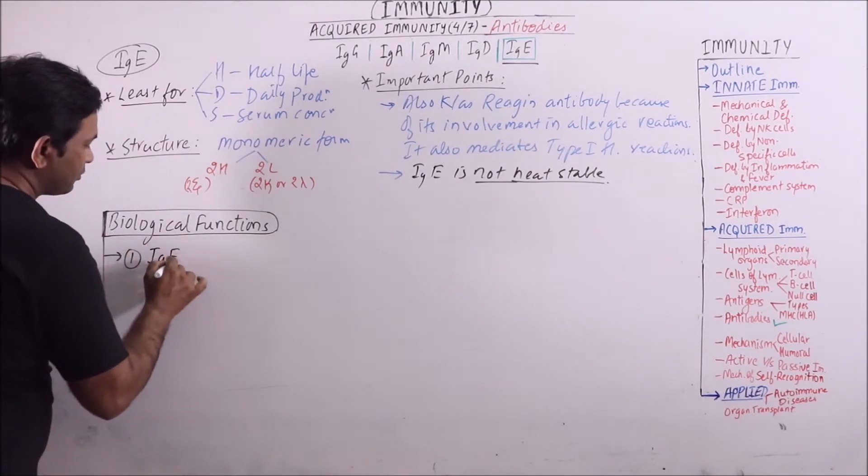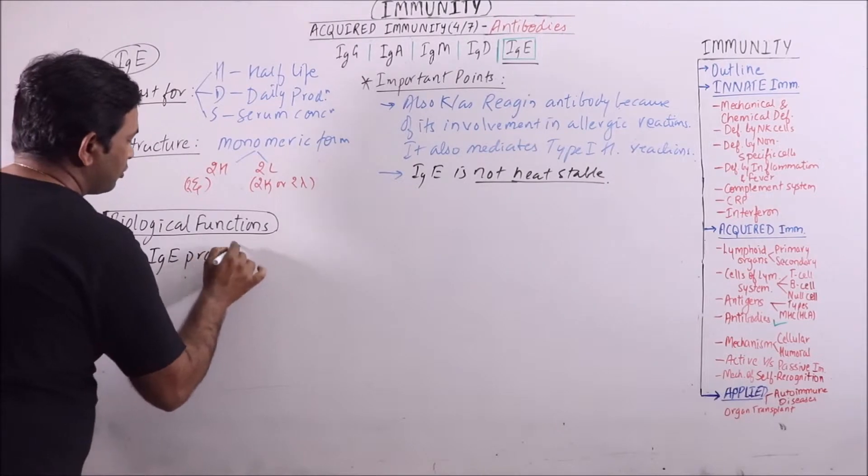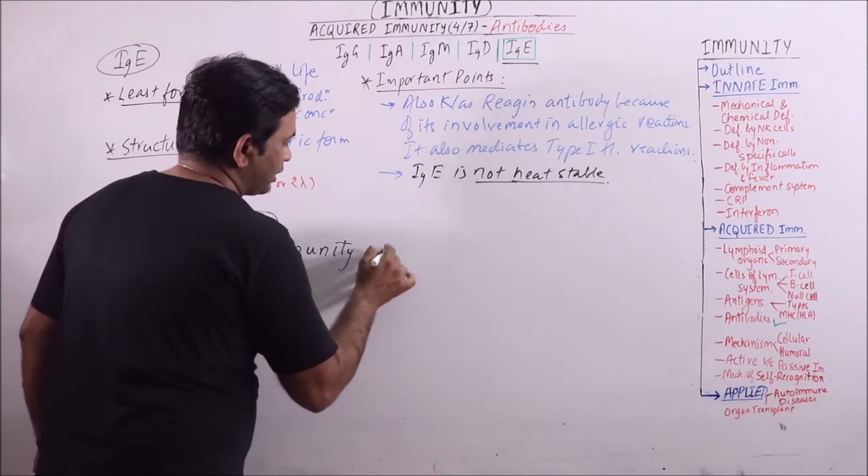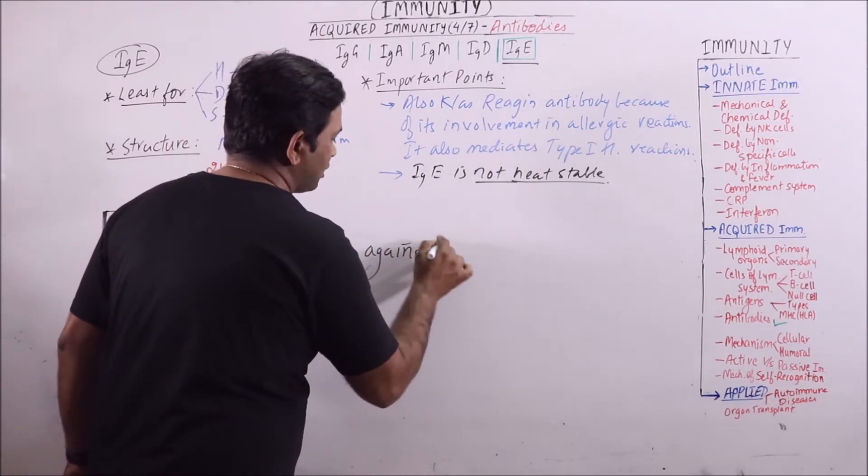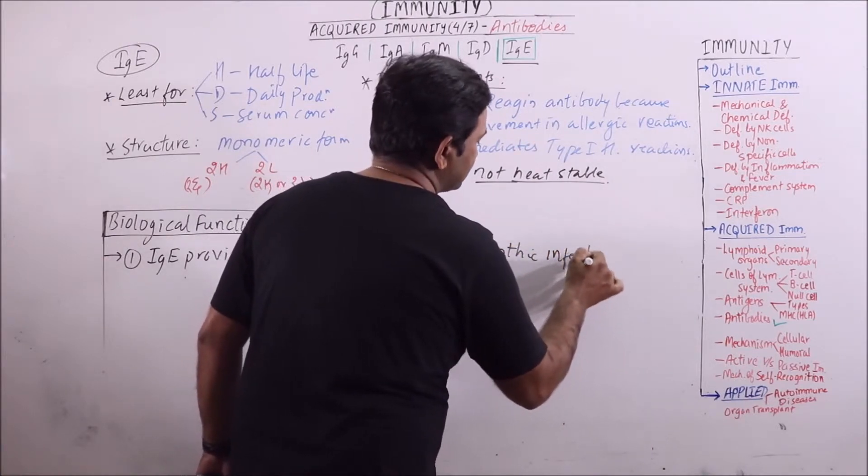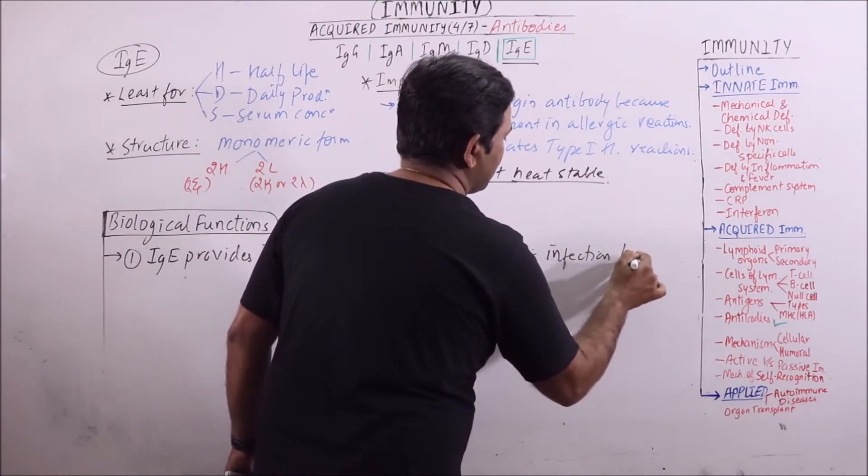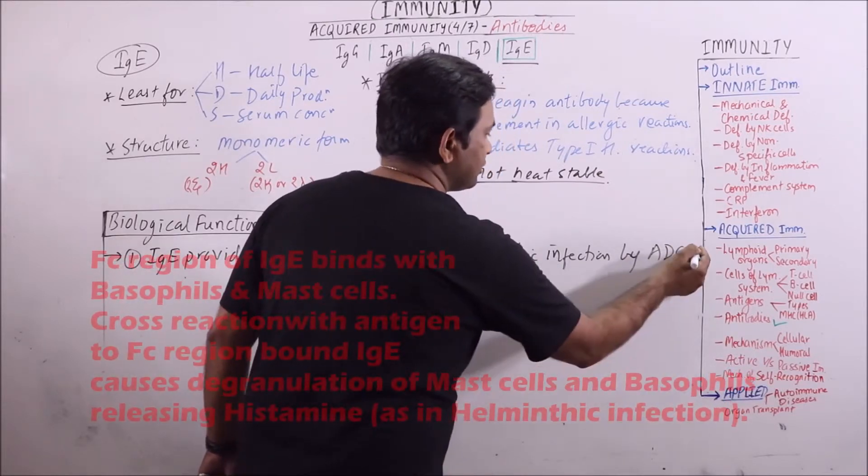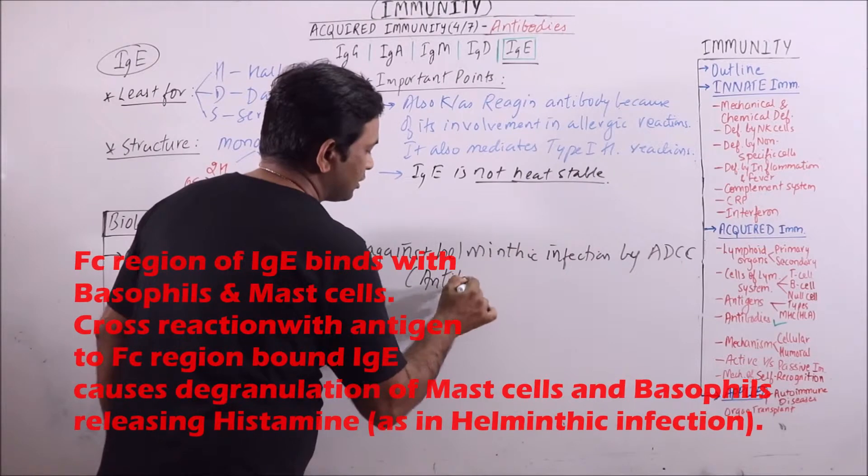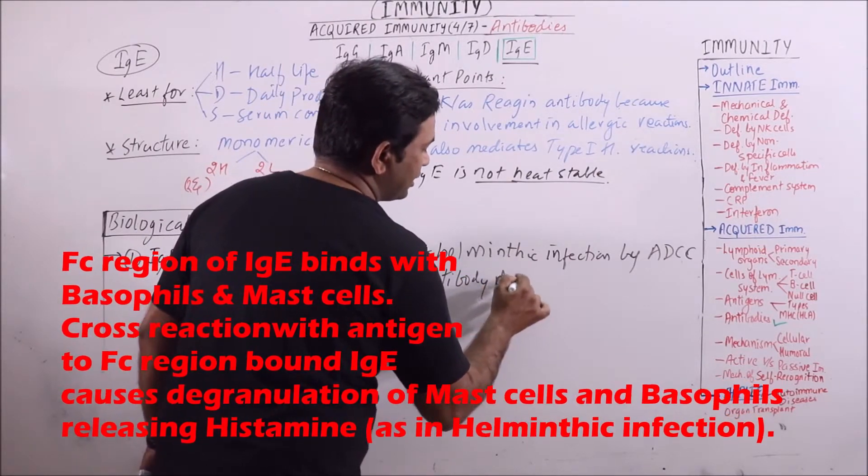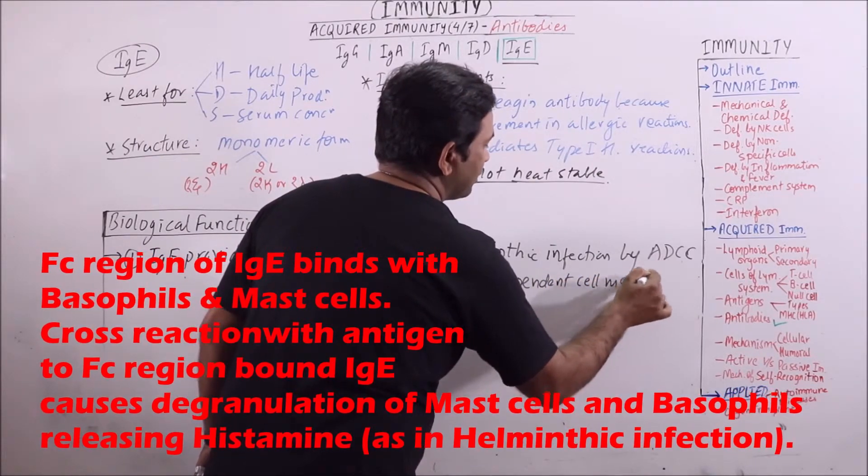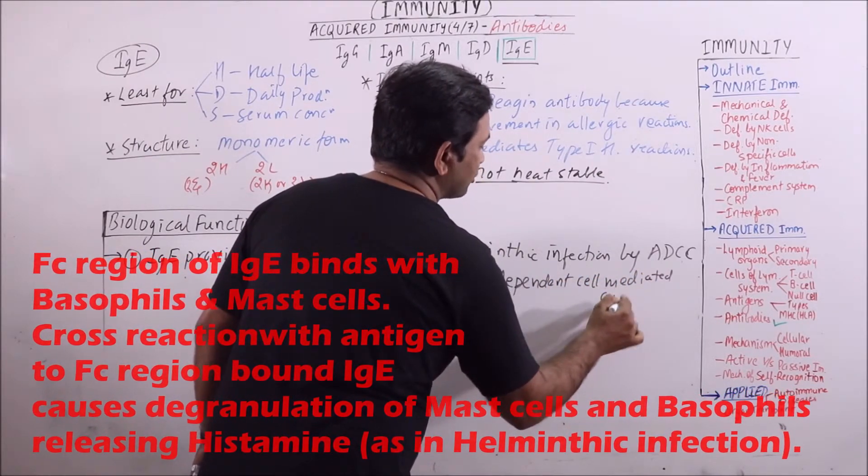IgE provides immunity against helminthic infections by ADCC. ADCC means antibody-dependent cell-mediated cytotoxicity.